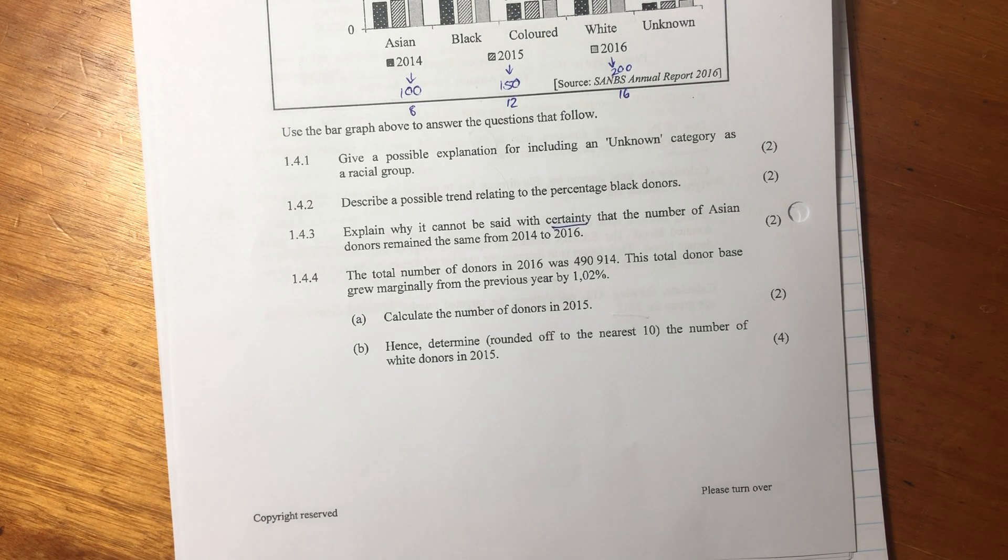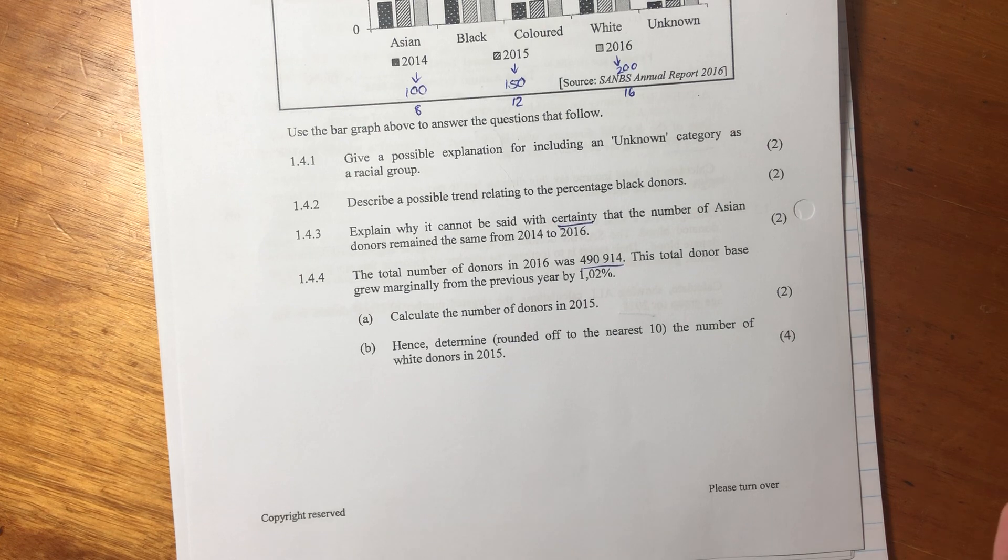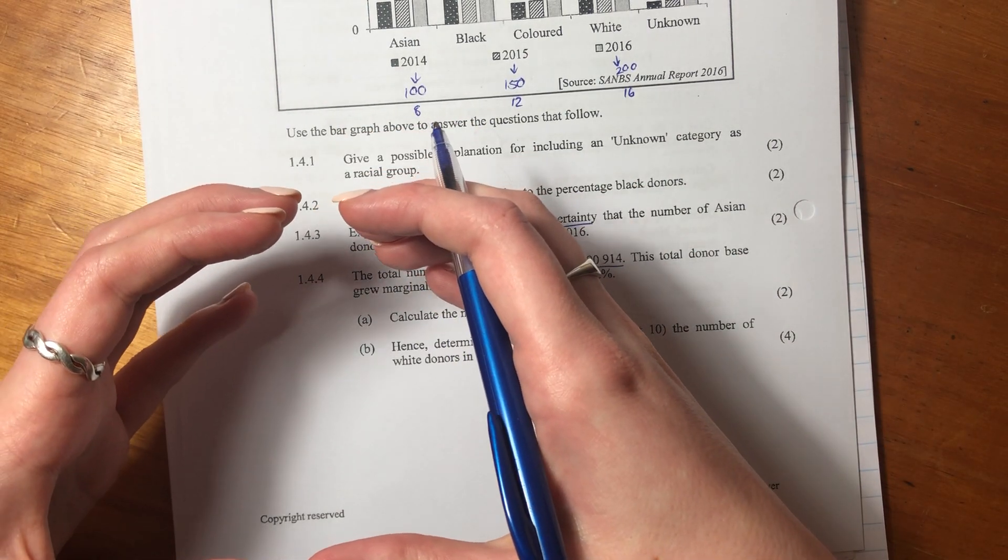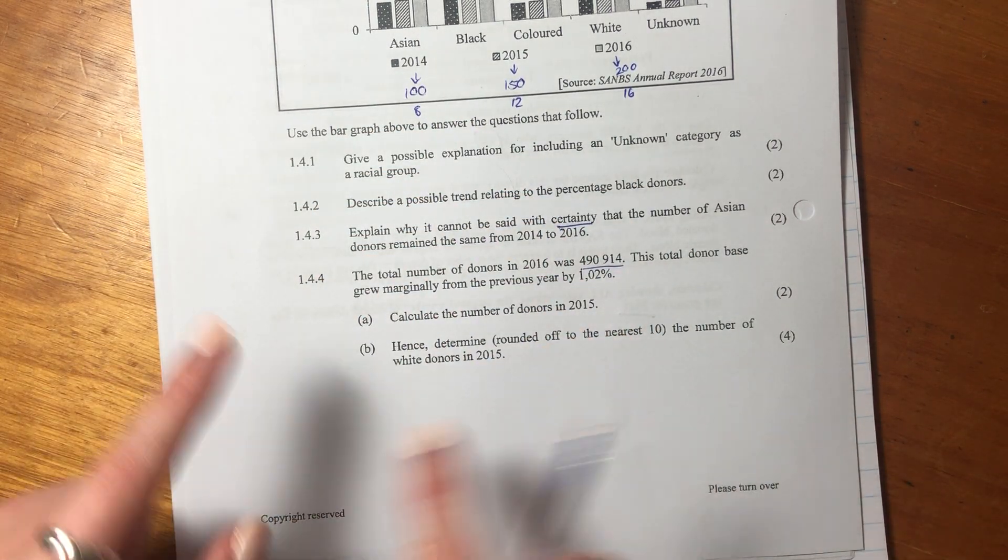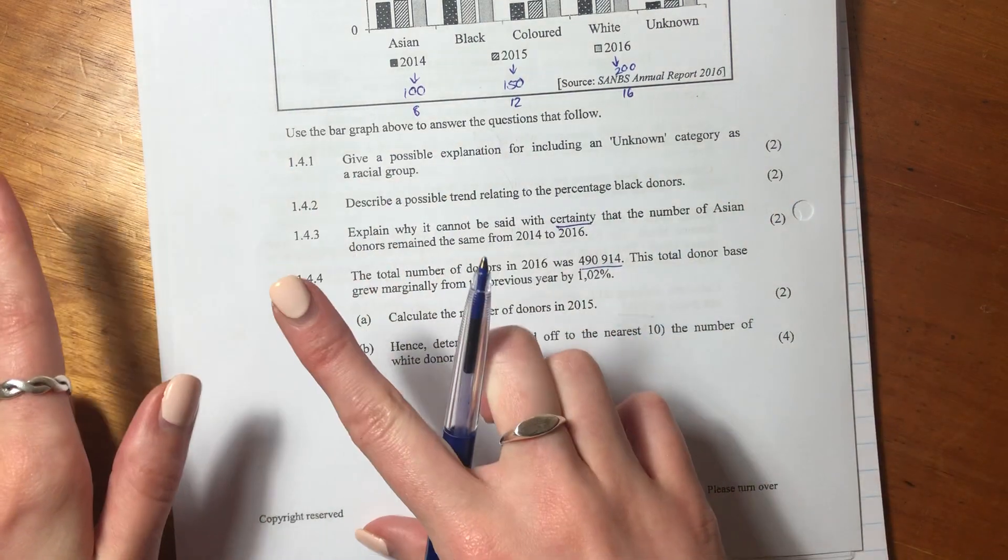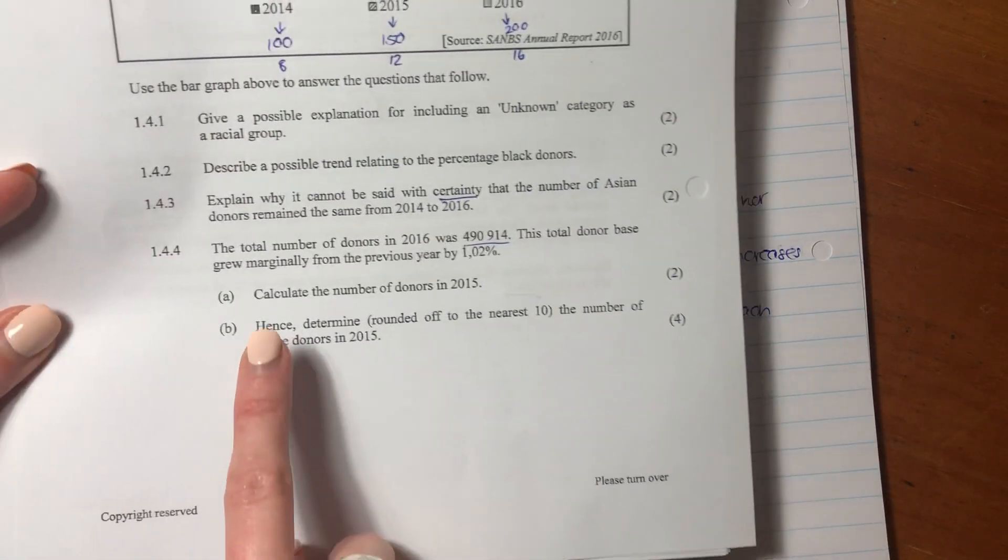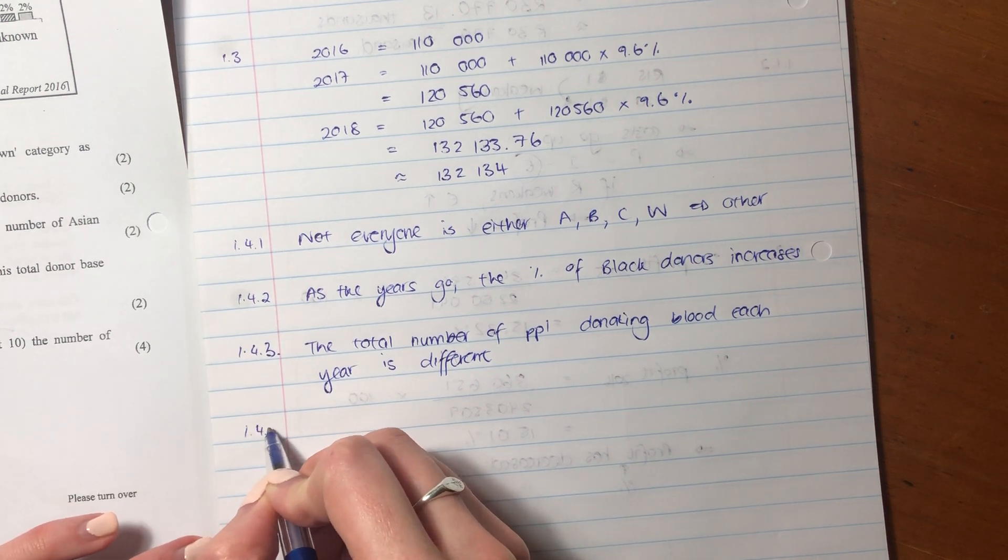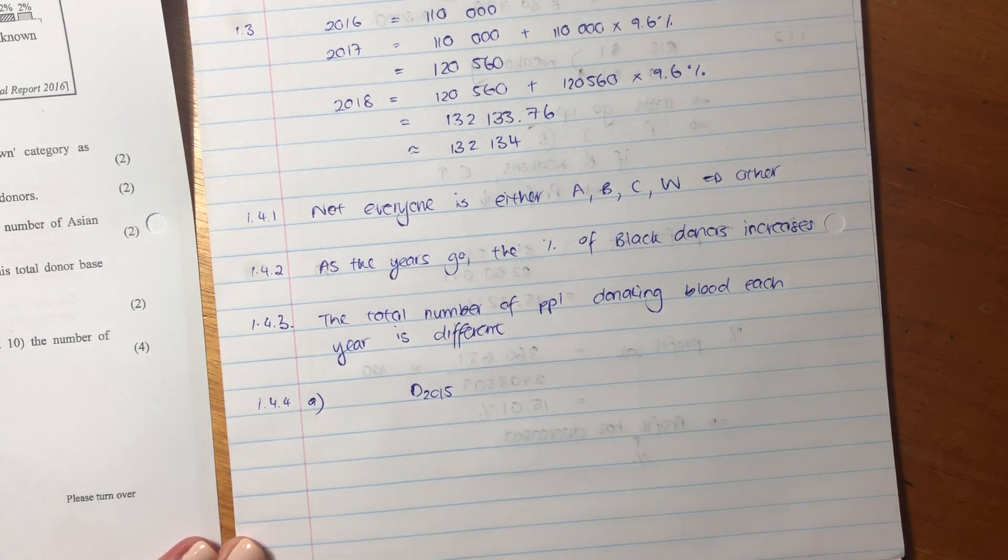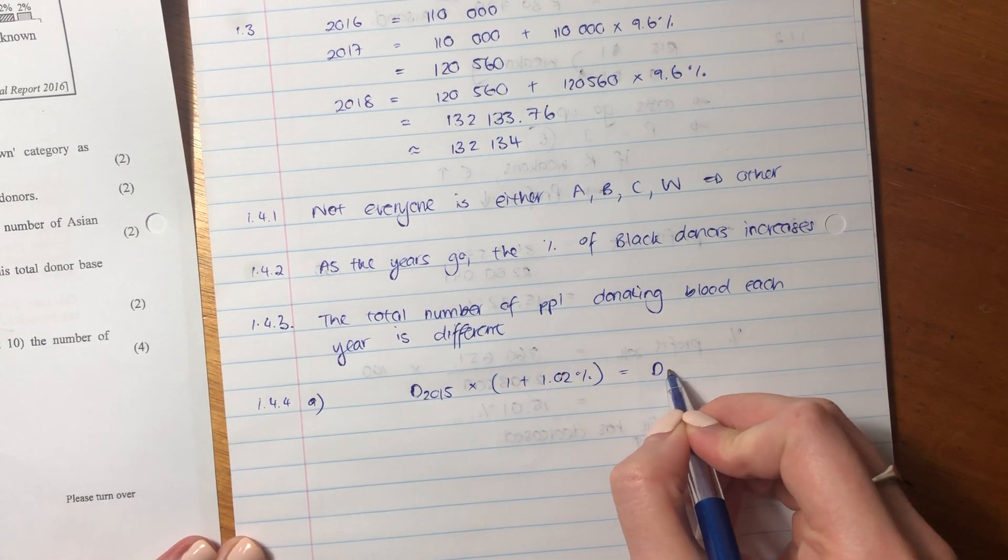Let's now move on to 1.4.4. 1.4.4 says the total number of donors in 2016 was 490,941. This total donor base grew marginally from the previous year by 1.02%. So it's basically saying 2015 we had so much, we increased that by 1.02%, and that gives us the answer for 2016. So 2016 there were more people than in 2015. That's very important. So let's write that down. Well, firstly, let's read the question. It says calculate the number of donors in 2015.